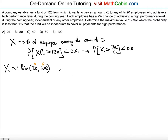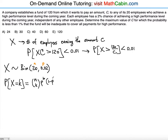We know the probability distribution: the probability that the random variable X equals k is N choose k, multiplied by P to the kth power, multiplied by 1 minus P to the power of N minus k.